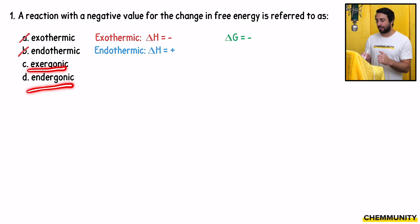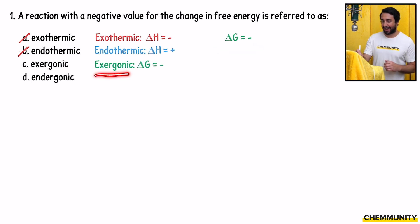Exergonic and endergonic are words that relate instead to delta G, to Gibbs free energy. A negative delta G is referred to as an exergonic reaction. Endergonic would be delta G is positive. A negative value for the change in Gibbs free energy, that's delta G equals negative, that is going to be exergonic.